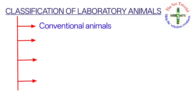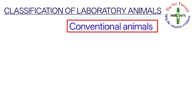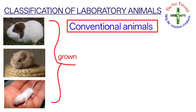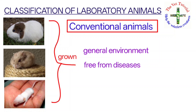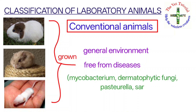Now let's start with the classification of laboratory animals. There are four types: first, conventional animals; second, notobiotic animals; third, specific pathogen free animals; and fourth, germ free animals. Conventional animals are derived and grown in a general environment but are free from diseases communicable to humans, like mycobacteria, dermatophytic fungi, Pasteurella, and Sarcoptic scabiei.